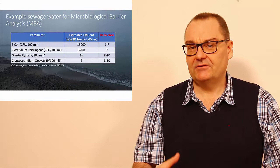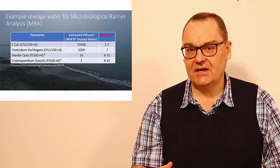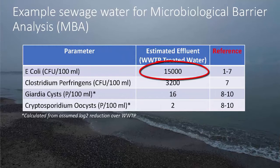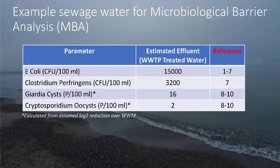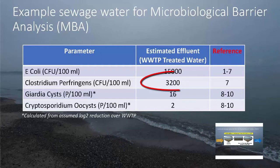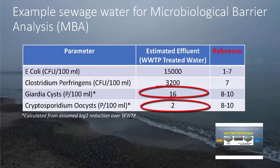Summarizing the literature study, we're now going to look at the indicators and the counts of the different indicators. E. coli, about 15,000 of them coming out in the treated water from the wastewater treatment plant. Clostridium perfringens, 3,200 coming out from the wastewater treatment plant. And Giardia, 16 counts, and Cryptosporidium, 2 particles in the effluent from the wastewater treatment plant. With this, we have now the treated wastewater that I'm going to use to make an MBA for drinking water production based on this raw water.